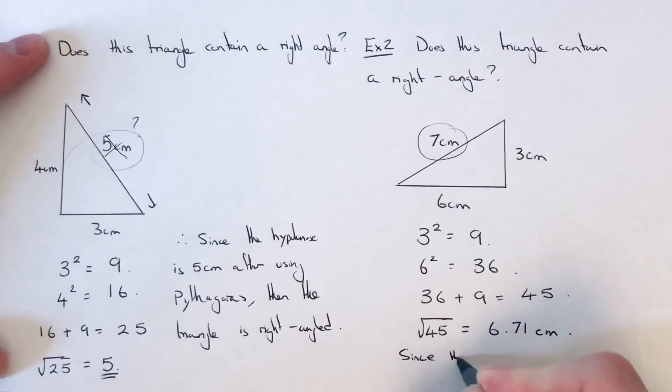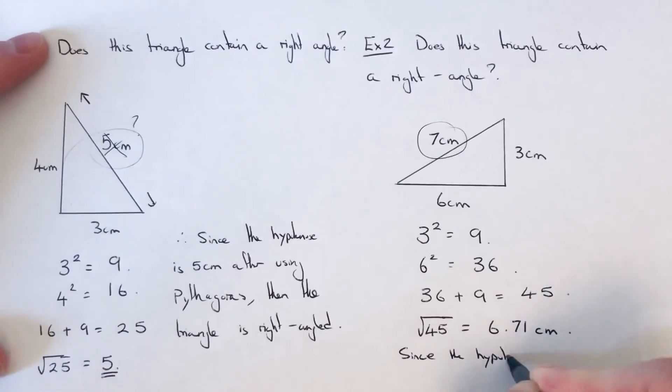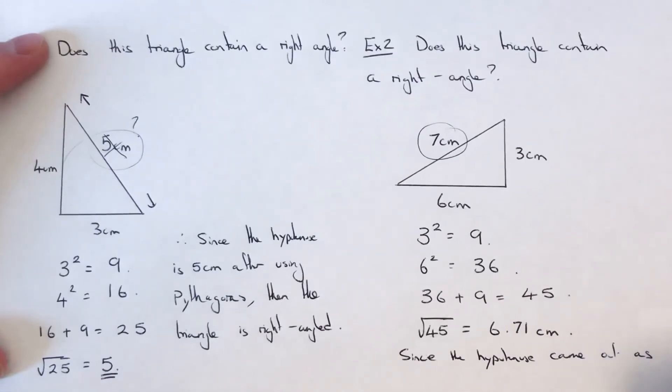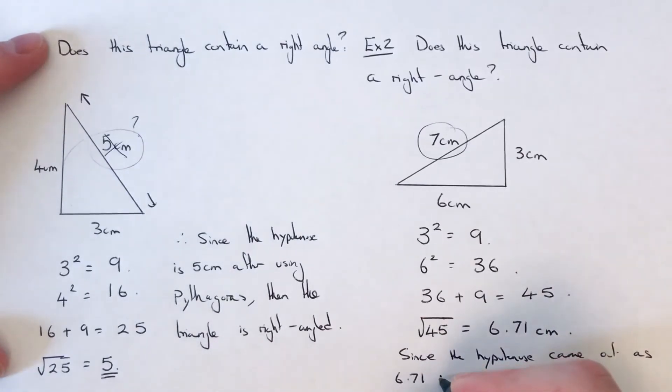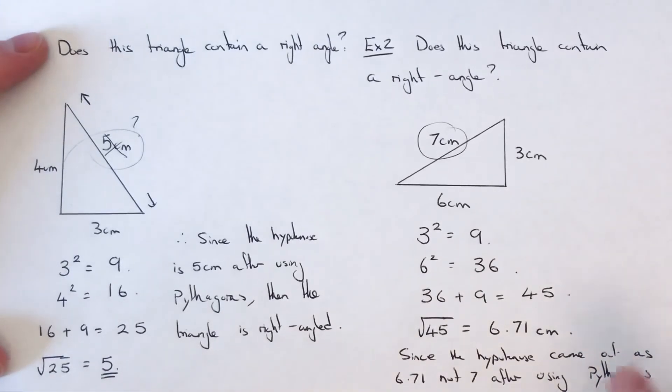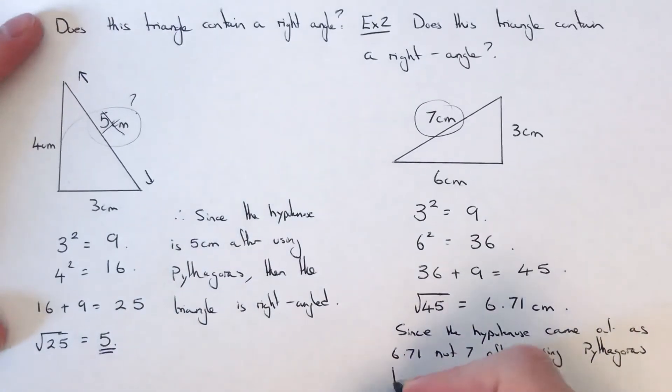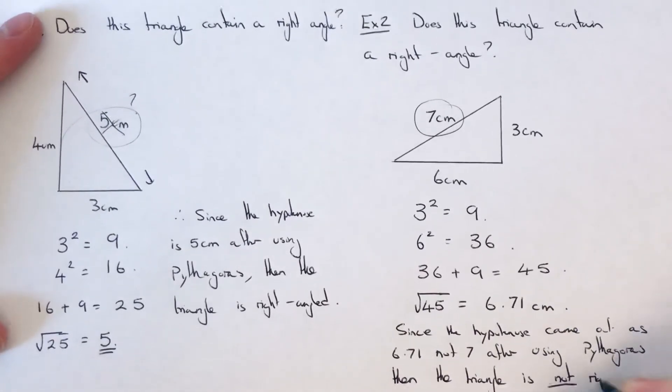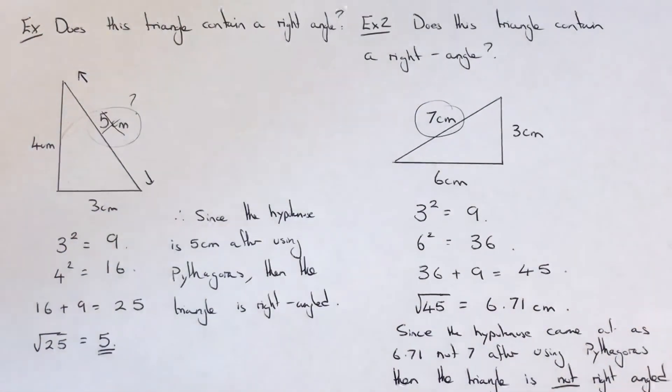Let's just write a comment on that. So since the hypotenuse came out as 6.71, not 7, after using Pythagoras, then the triangle is not right angled.